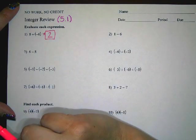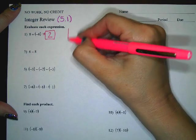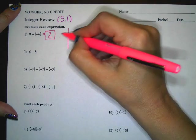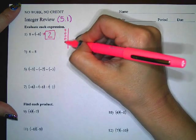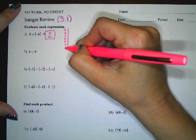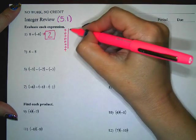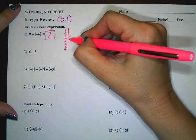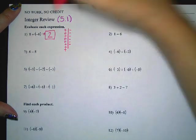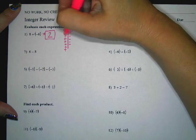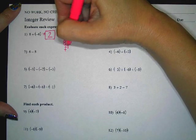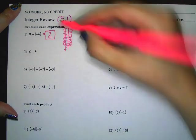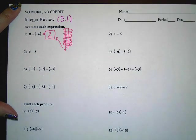If you want to do it with counters, you could go ahead and write how many positives you have. So I would have eight positives and six negatives, and I can pair them up. Then I want to see how many I have left over at the end. I have two positives left, which checks my work — I got positive two.